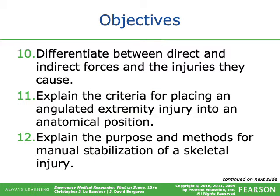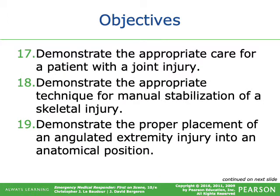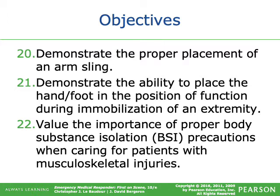Further objectives: differentiate between direct and indirect forces and the injuries they cause; explain criteria for placing an angulated extremity injury into anatomical position; explain the purpose and methods of manual stabilization; explain the priority of care for open skeletal injury and multi-system trauma; demonstrate appropriate assessment and care for long bone and joint injuries; demonstrate manual stabilization, proper placement of an angulated extremity, arm sling, and position of function; and value the importance of body substance isolation precautions when caring for patients with musculoskeletal injuries.